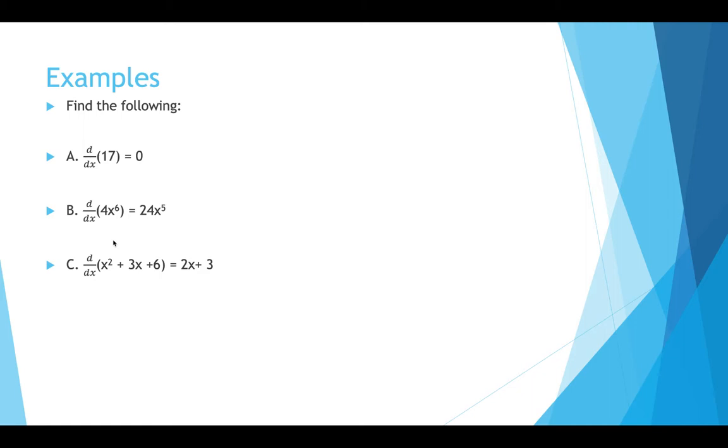We're going to find the following – d dx of 17, since 17 is a constant, is equal to 0.